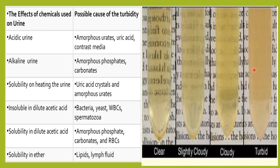Suppose you have a turbid urine and aap ne usmeh dilute acetic acid add kiya. On adding dilute acetic acid, the urine became clear — that means it is because of amorphous phosphates, carbonates, or RBCs. But agar aap ne dilute acetic acid add kiya but still it is not getting cleared up, that could be because of bacteria, yeast, fungus, pus cells or WBCs, and also because of spermatozoa or semen. Suppose if you have a turbid urine and then you add ether and the turbidity clears, that could be because of lipids or lymph fluid.